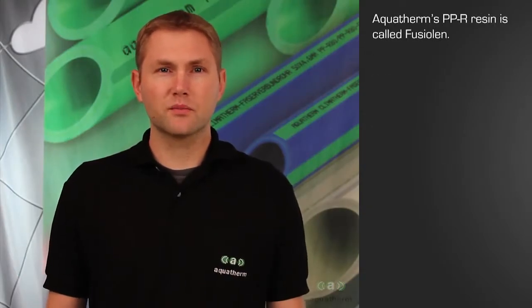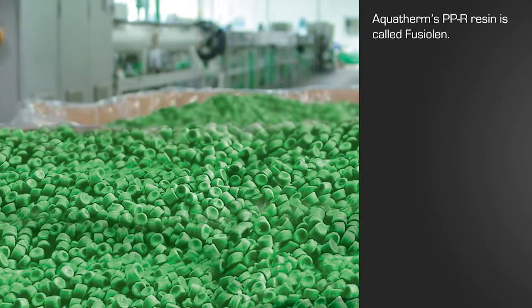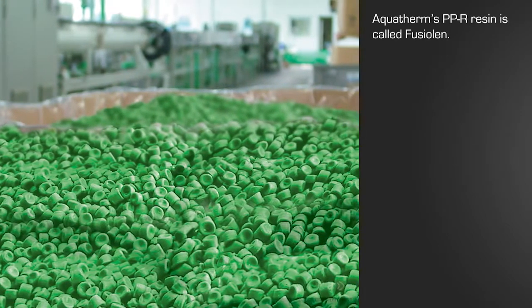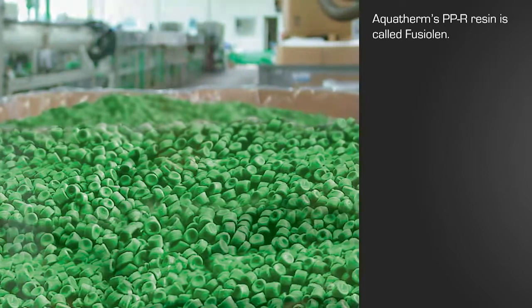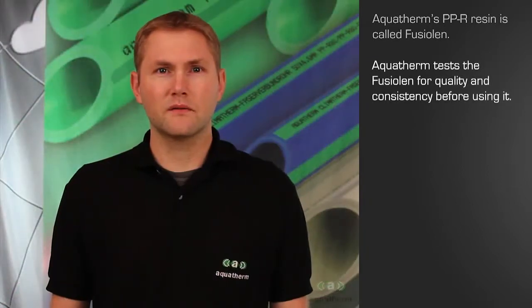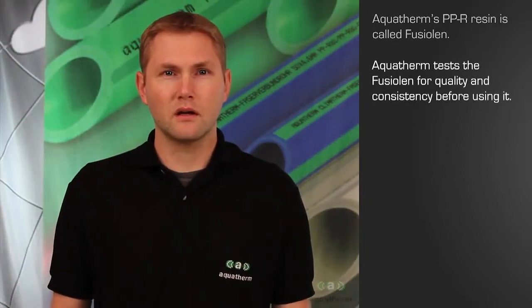Aquatherm uses only the highest quality polypropylene to produce its proprietary resin, Fuseolen. Aquatherm exhaustively tests the Fuseolen, as well as pipe and fittings that are made from it, to ensure the consistent quality in everything they make.